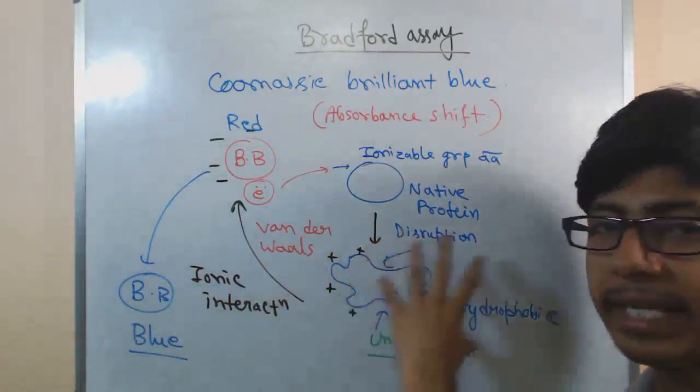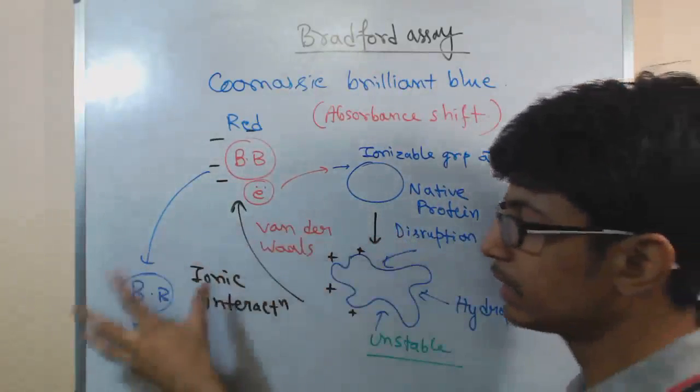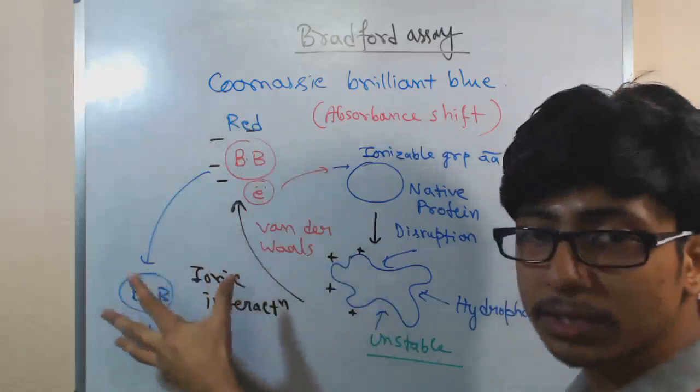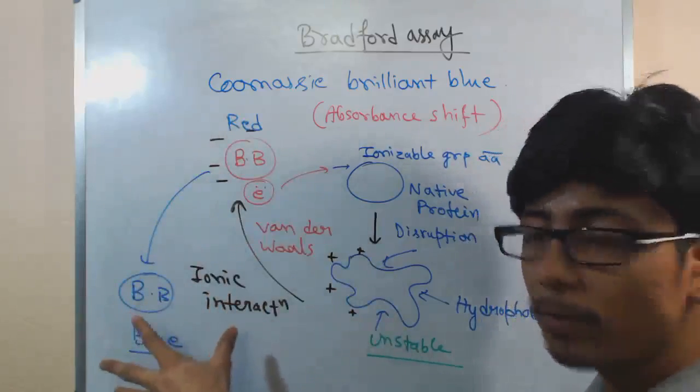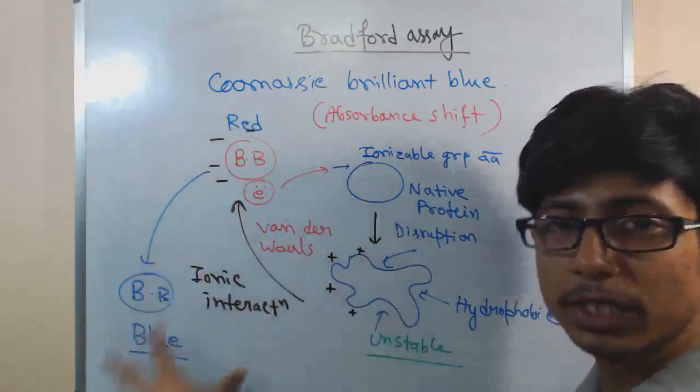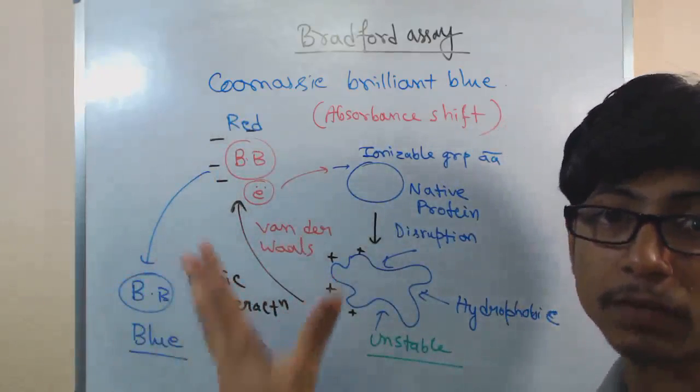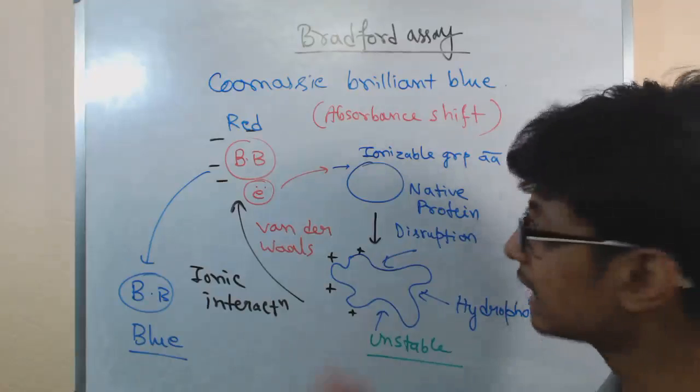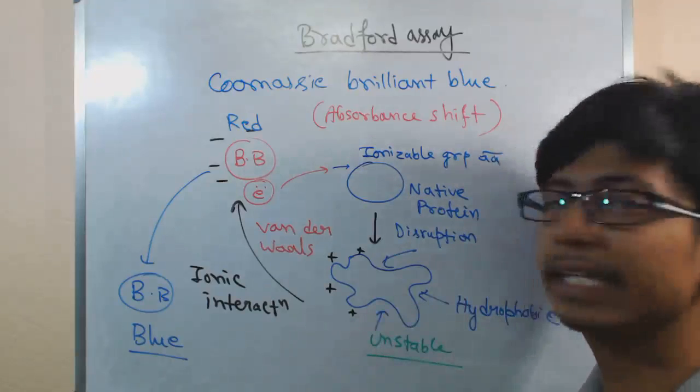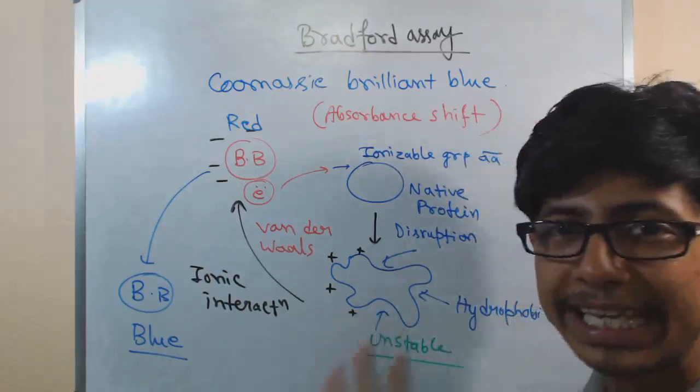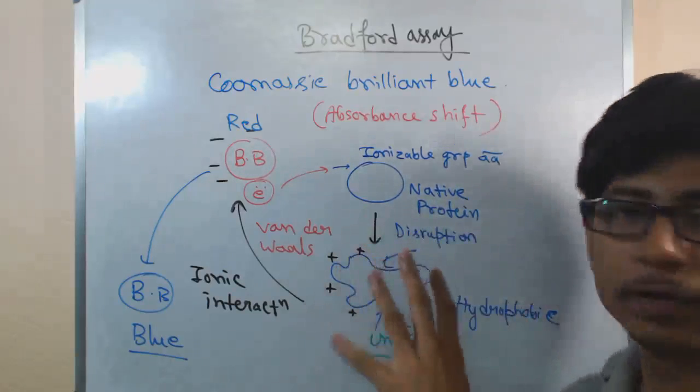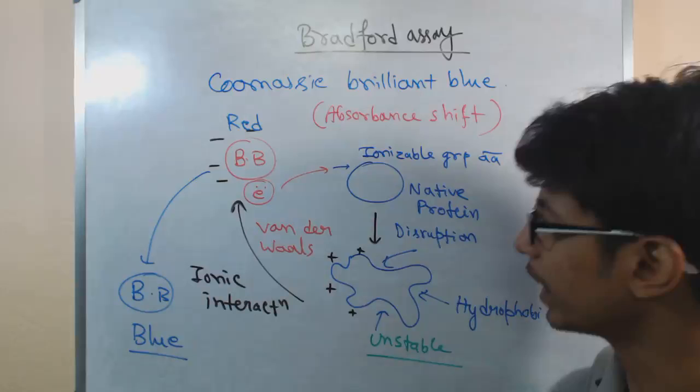The higher the protein content, the higher the blue coloration, the higher the complex is formed, the higher the blue coloration that is formed, that we can detect using spectrophotometer at 595 nanometer of wavelength of light, and that is extremely helpful for us to understand the concentration of a protein in a sample. This is the exact way Bradford assay works.